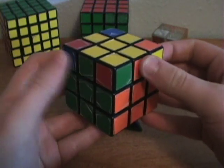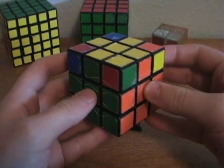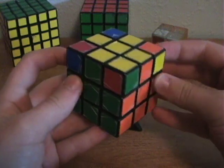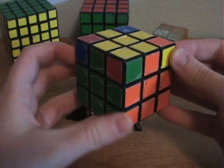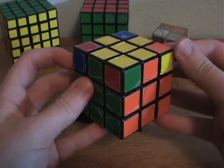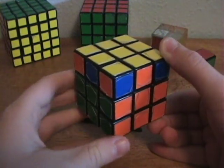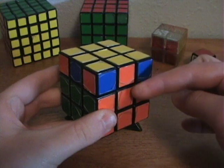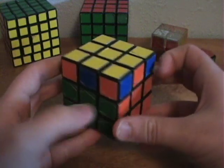And here we go, the green and orange edges are paired with their centers. But there are two possibilities that could happen here. The first is what you see right now, where the edges are right next to each other. The second is when you find the paired edges and centers opposite from each other.